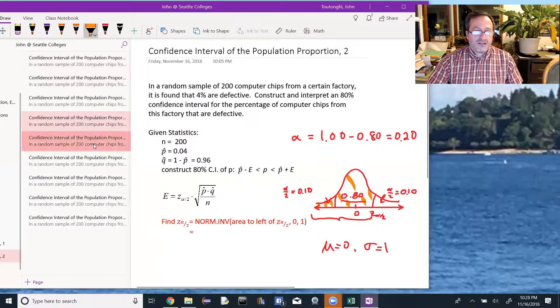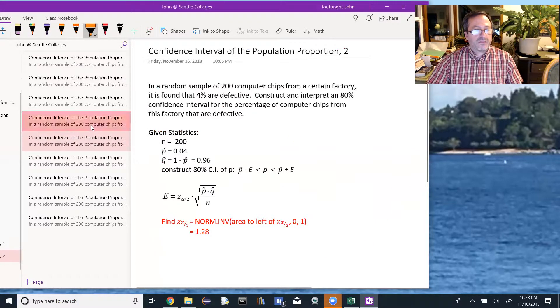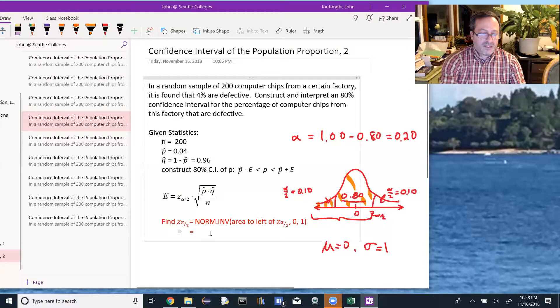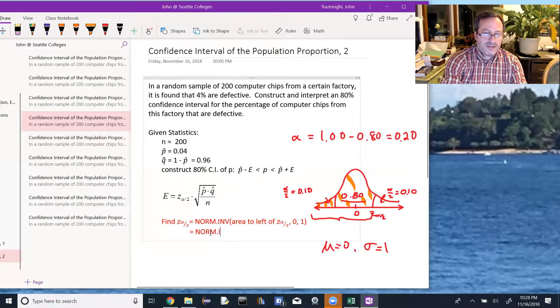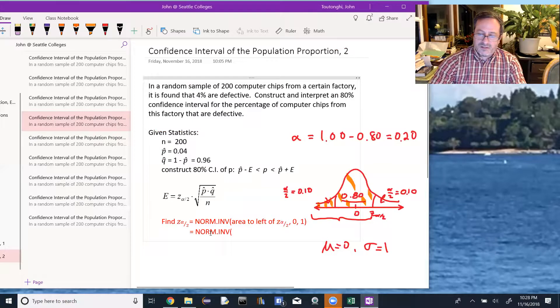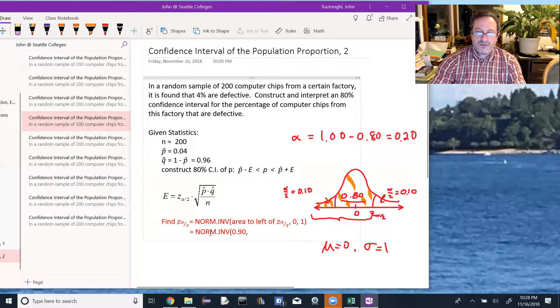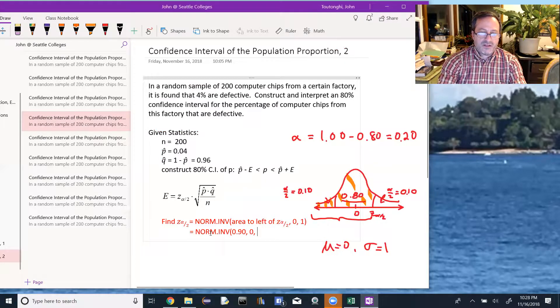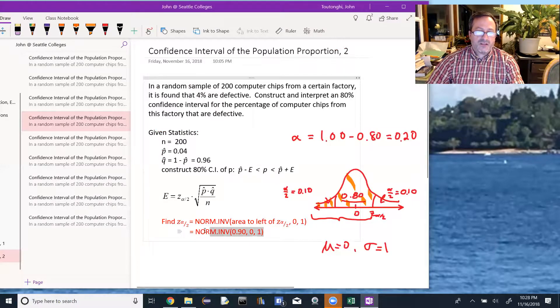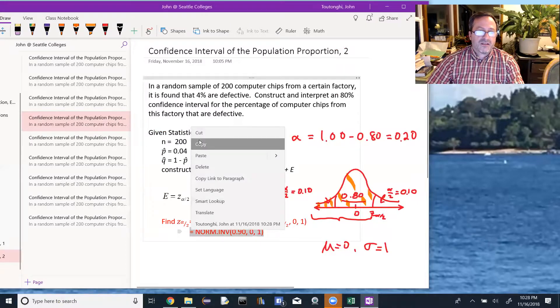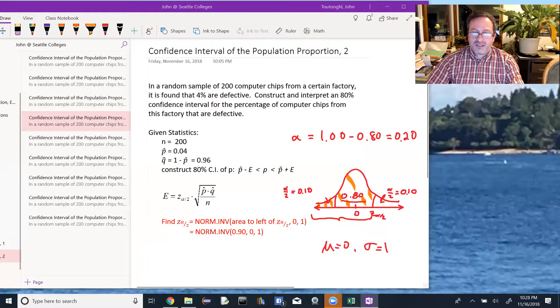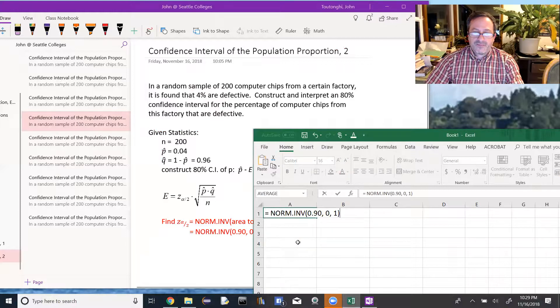So when we go to Excel, it's going to be norm.inverse 0.90 for the area to the left of z alpha over 2, a mean of 0, and a standard deviation of 1 because we're looking at the standard normal distribution or the z-scores. I'm just going to copy this, jump over to Excel, paste it in, tab 1.28.